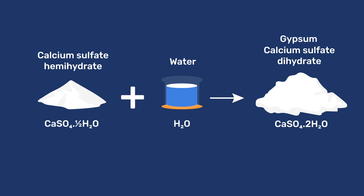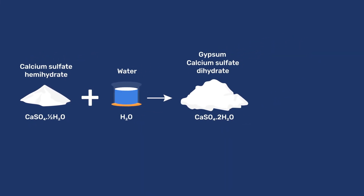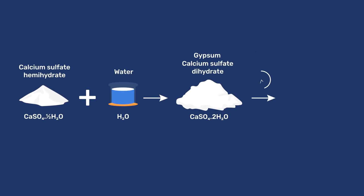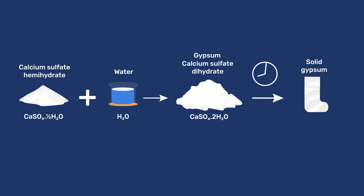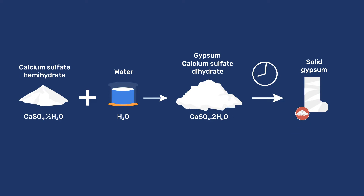The formation of gypsum takes place spontaneously and rapidly, but still allows enough open time to shape or apply the material. This, together with the ease of production, has determined the success of gypsum throughout the ages.